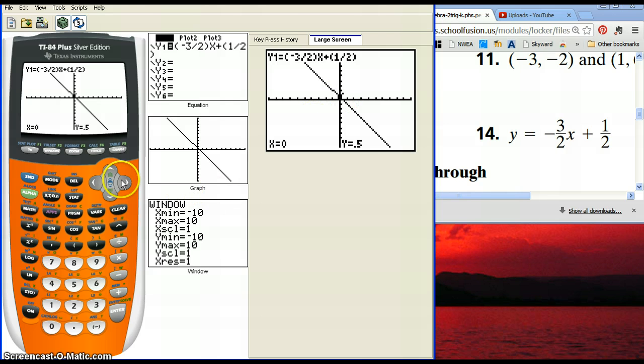If you start to arrow to the right, it will give you a lot of different points that are on your line, not necessarily integer points or points that you would consider putting on your graph if you were doing it by hand.